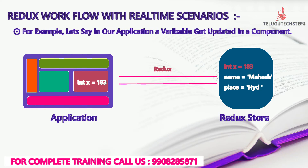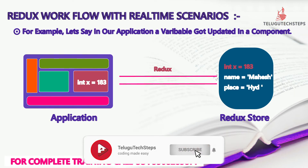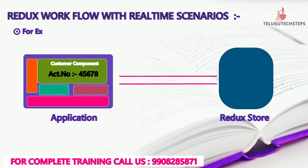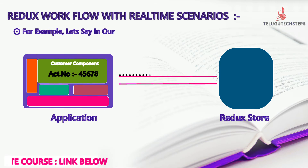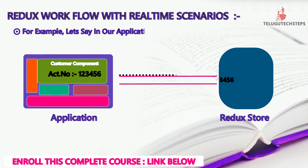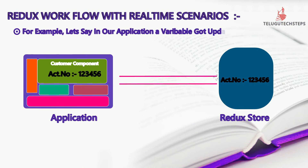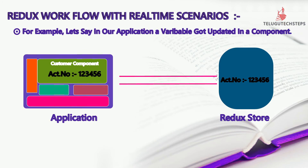For example, a customer component has an account number in the Redux Store. You can update the account number and send it — that is what the store is for. If you have an account number and you update the variable, the data is updated in the Redux Store, and that updated data becomes available to other components as well.